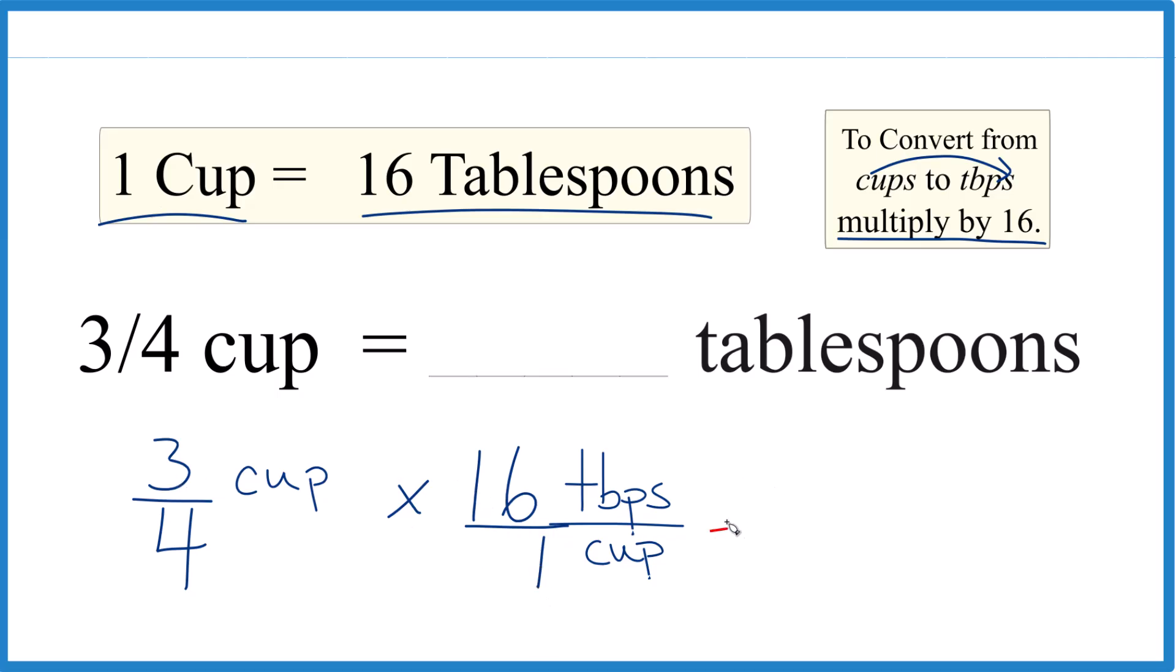So 3 times 16 equals 48, and 4 times 1 equals 4. If you divide 48 by 4, you get 12.